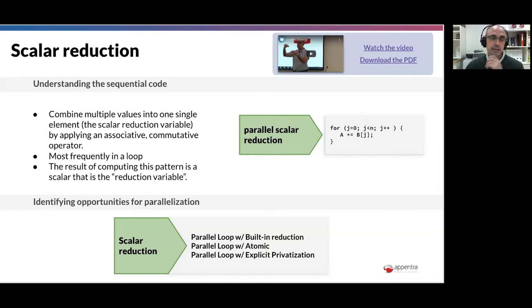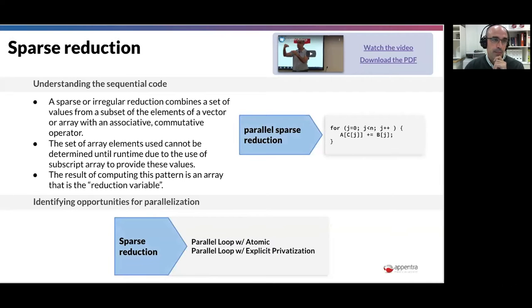Finally, sparse reduction. Why we focus on this? In programming languages like OpenMP, OpenACC application program interfaces, you have built-in support for scalar reductions but you don't have built-in support for this type of reductions that we call sparse. Sparse in the sense that at compile time you don't know in what element of the output array the code will perform the accumulation. You don't know this information, so you cannot know at compile time what elements will be updated.